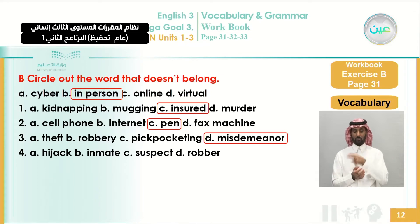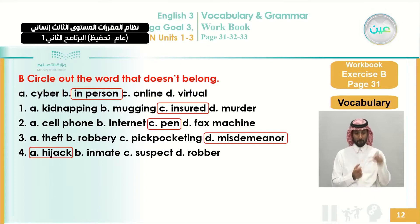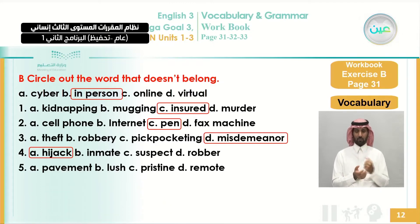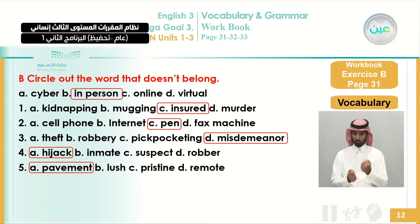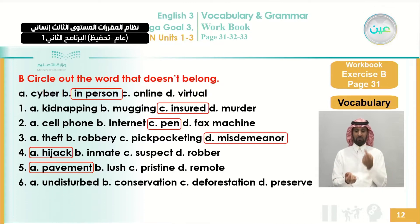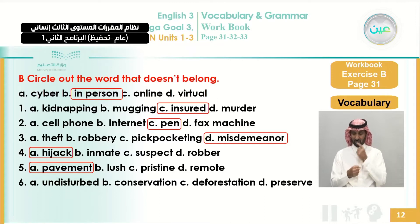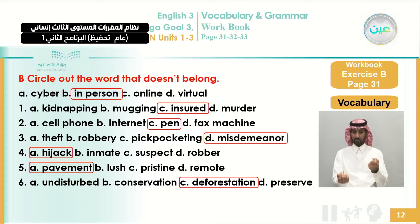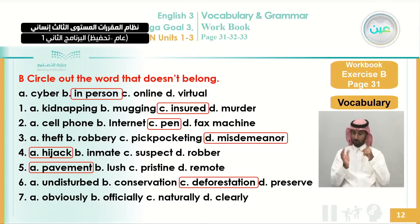Hijack, inmate, suspect, and robber — hijack is the odd one because inmate, suspect, and robber refer to persons, while hijack is a crime. Pavement, lush, pristine, and remote — pavement is the odd one because the others relate to nature. Undisturbed, conservation, deforestation, preserve — deforestation is the odd one because the others are about protecting the environment. Obviously, officially, naturally, clearly — officially is the odd one because the others describe clarity.